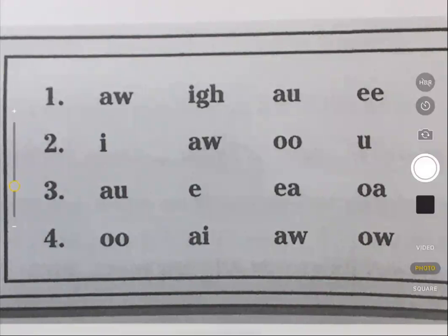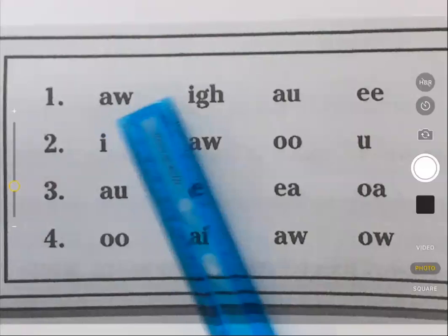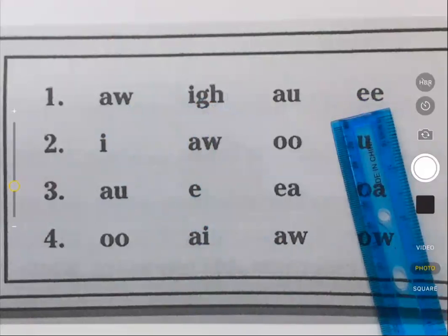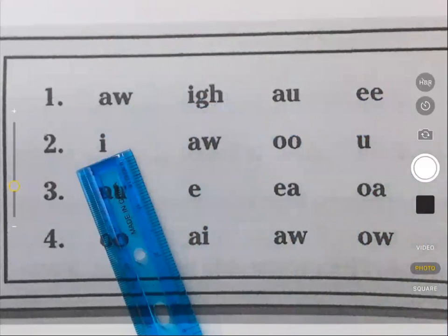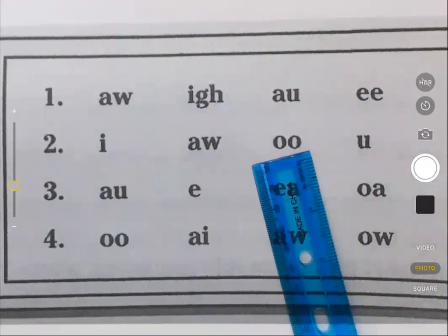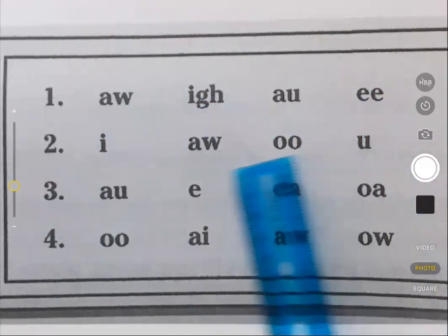Here we go. First line: aw, igh, au, ee. Second line: i, aw, oo, u.